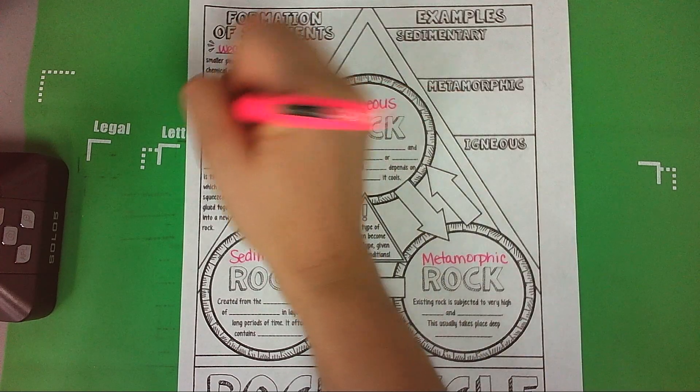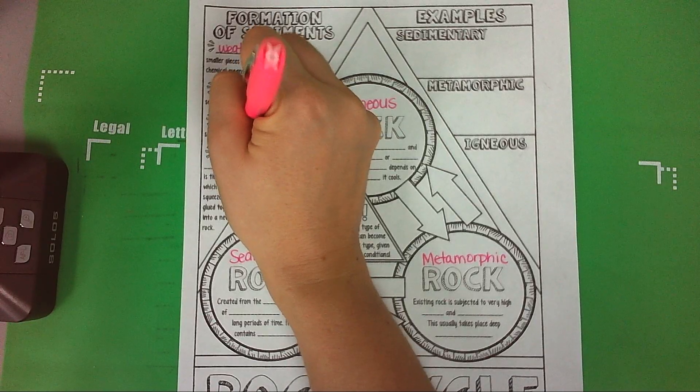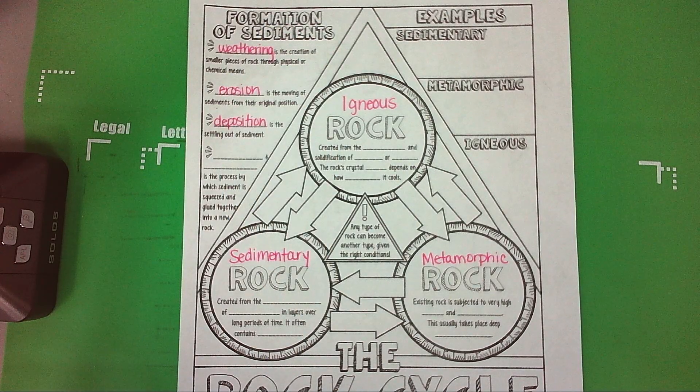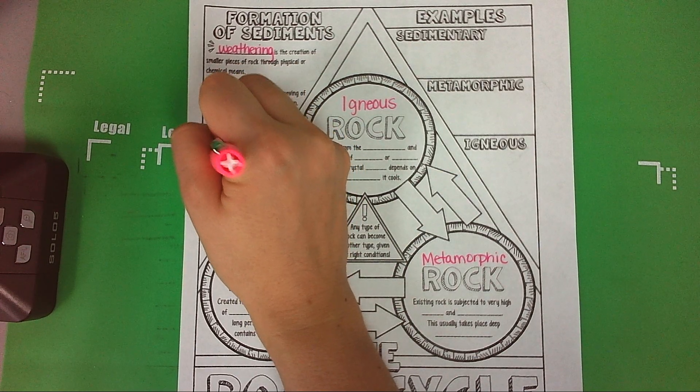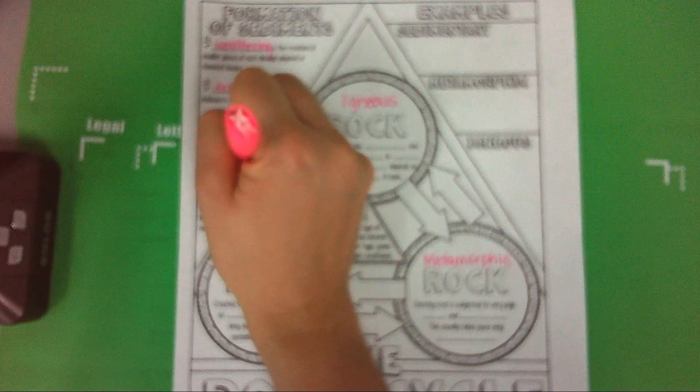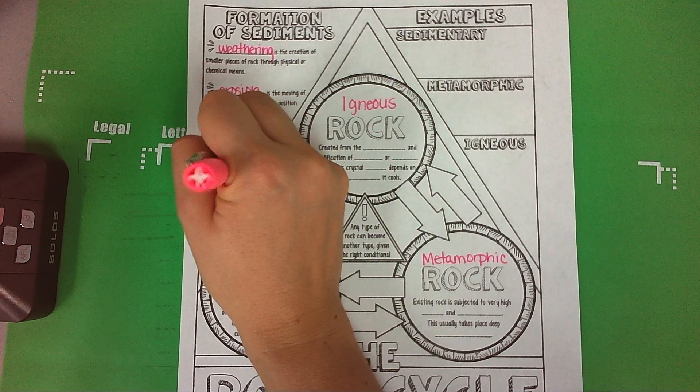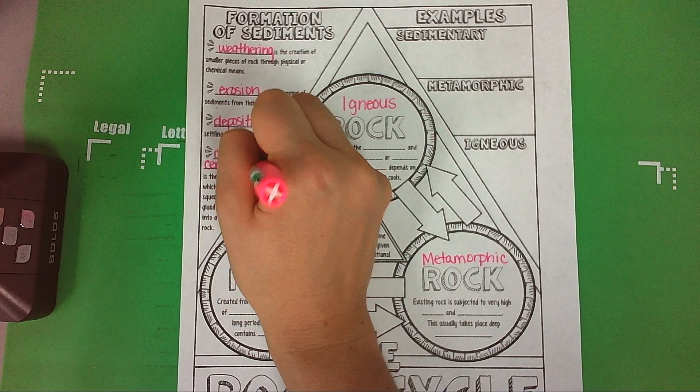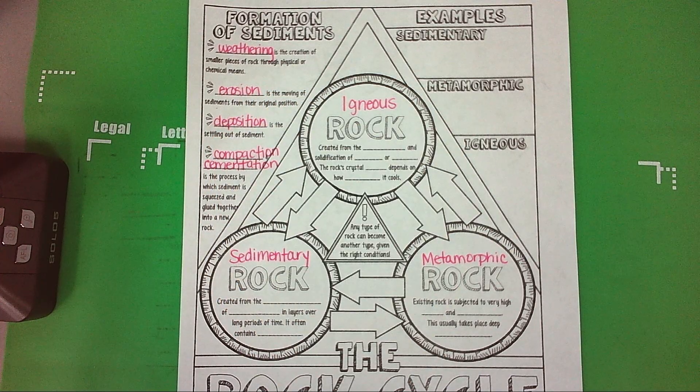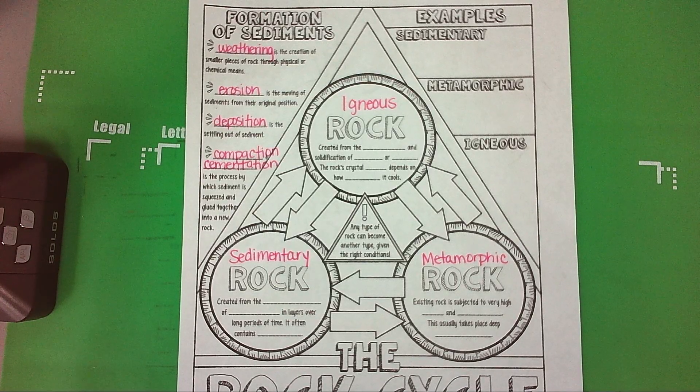The next one is deposition - it's the settling out of sediment. The next two processes that we're going to talk about is compaction and cementation. Cementation is the process in which sediment is squeezed and glued together into a new rock.